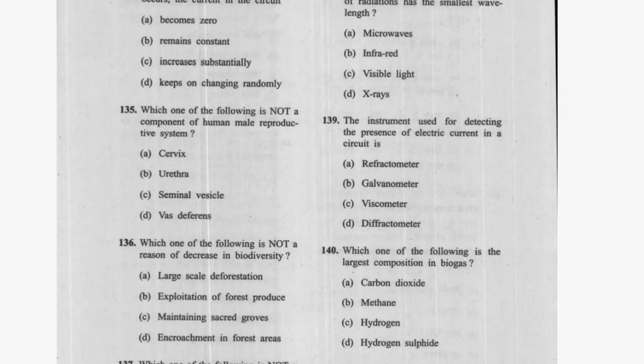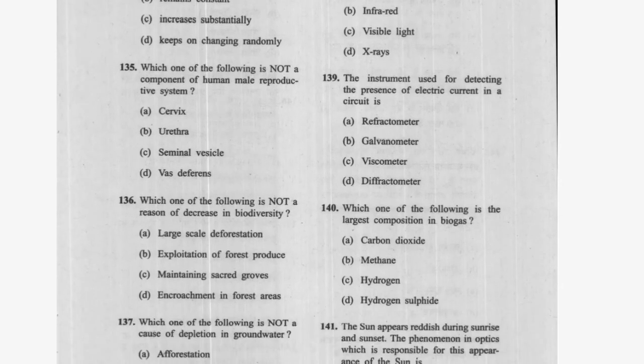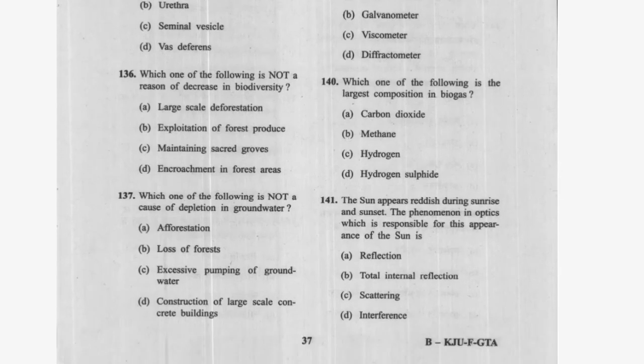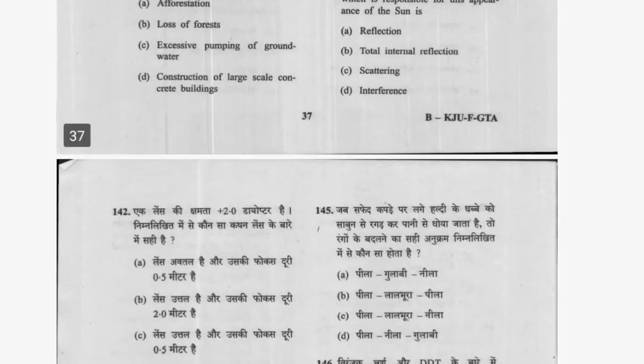Question 128: Which type of radiation has the smallest wavelength? X-rays — option D. Question 129: The instrument used for detecting the presence of electric current in a circuit is a galvanometer — option B. Question 130: Which is the largest composition in biogas? Option B is correct — methane. Question 131: The sun appears reddish during sunrise and sunset due to scattering of light.